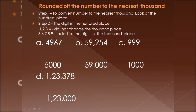Now let's look at rounding a number to the nearest thousand. The same rules apply but we concentrate on the thousands place. If the digit in the hundreds place is 1, 2, 3, or 4, we do not change the thousands place. If the digit in the hundreds place is 5, 6, 7, 8, or 9, we add one to the thousands place.